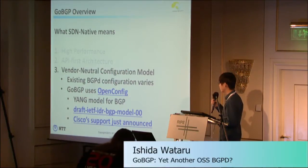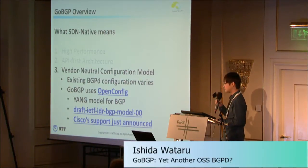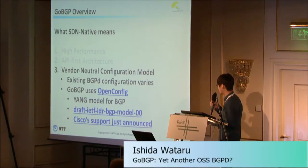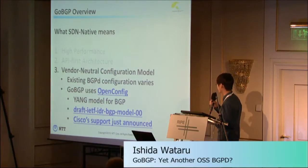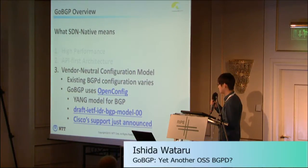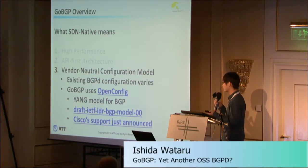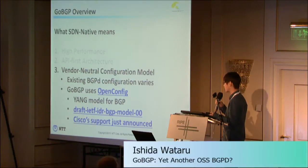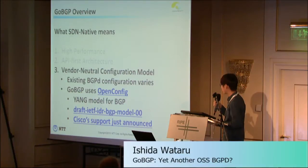The last feature is a vendor-neutral configuration model. Existing BGP daemon configurations vary widely, so we decided to use OpenConfig. It is a data model for BGP discussed in the IETF. On Tuesday this week, Cisco announced that iOS is starting to support this OpenConfig configuration model. This means the model is the same, so you can write a script to convert GoBGP's configuration file to Cisco's configuration files, and there is a one-to-one mapping, making it easier to switch between different BGP implementations.